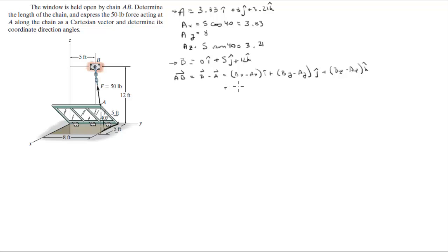When you plug the numbers in for the B and the A vector, you're going to get that this is equal to negative 3.83i minus 3j plus 8.79k.